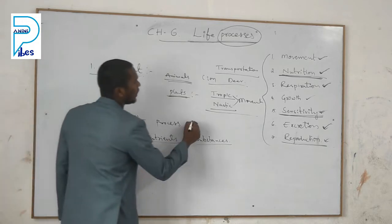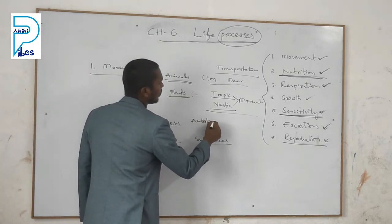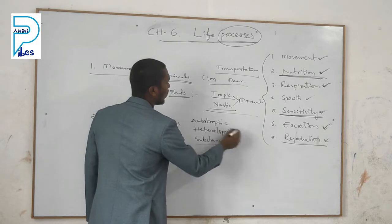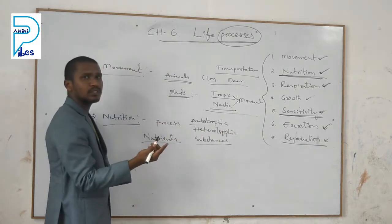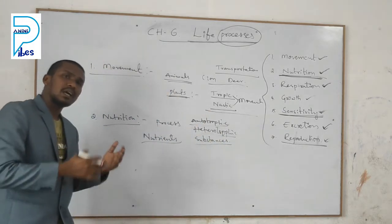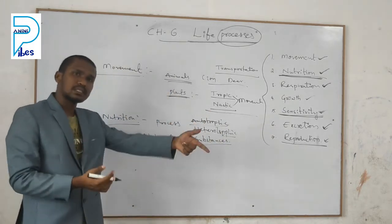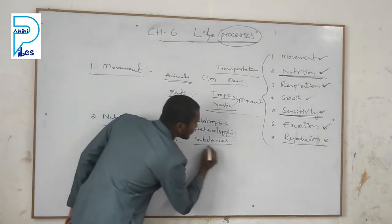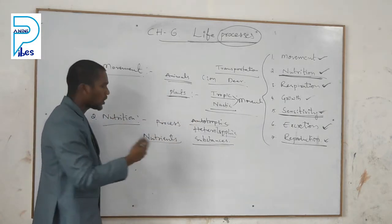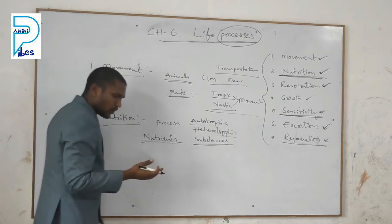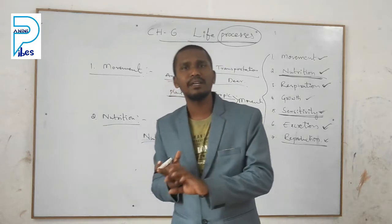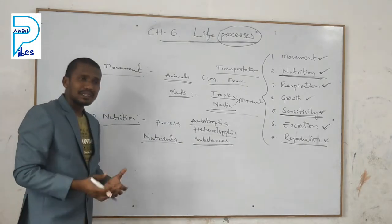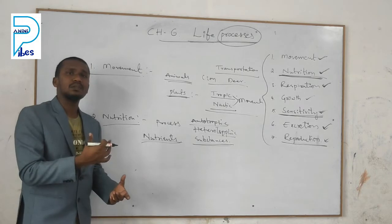Nutrition includes the collection of nutrients, which are the substances we take as food material inside the body. Nutrition will be of different types: autotrophic and heterotrophic. Autotrophic nutrition is found in plants and heterotrophic nutrition is found in animals. The nutrients you take include proteins, carbohydrates, vitamins, lipids (that is fats), minerals, and water — these are the nutrients needed as a food menu.